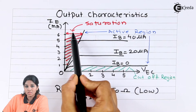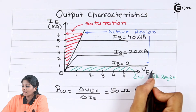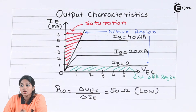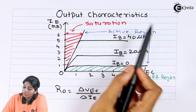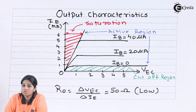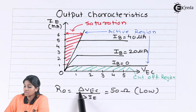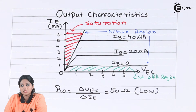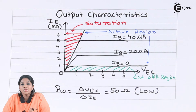The active region is present between the saturation and cutoff regions. From the characteristics, we see that if we increase collector-emitter voltage, the emitter current reaches a saturation level. Specifically, if we increase collector-emitter voltage beyond about one volt, the emitter current reaches saturation based on the value of base current. The output resistance RO is defined as the ratio of change in emitter-collector voltage (delta VCE) to change in emitter current (delta I). This value is small compared to common emitter and common base configurations — approximately 50 ohms.